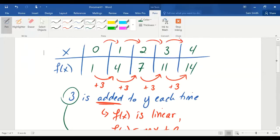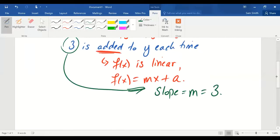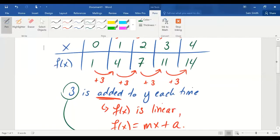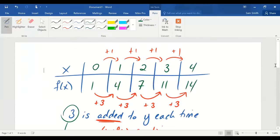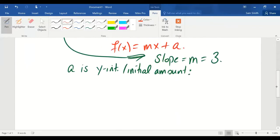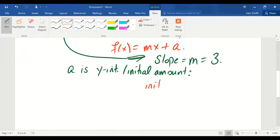My next question is, what is the value of a? And remember from the previous problem that a is the y-intercept, or the initial amount. It's the y value that's associated with x equals 0. In our table, the y value that's associated with x equals 0 is 1. So I would write that the initial amount, the a value, is 1.